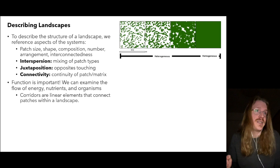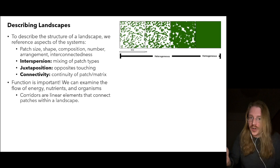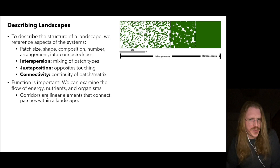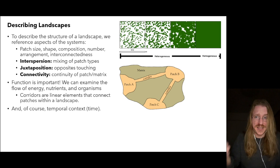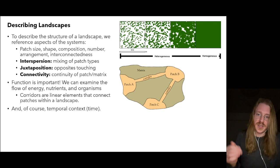A corridor is a linear element that connects patches within a landscape, so corridors facilitate many different processes. In human-dominated landscapes, corridors are especially important when it comes to conservation. And then there's time — temporal context is always important. Disturbance, succession, and even really big events like glaciation can all influence a landscape.